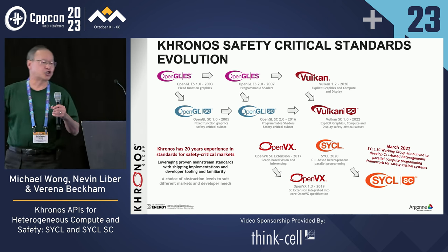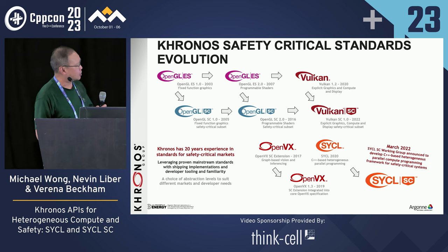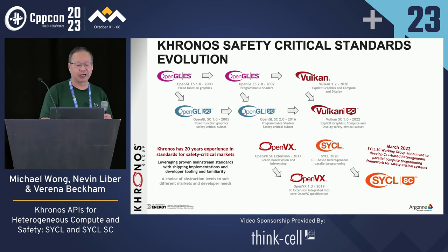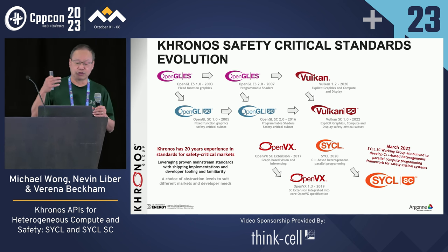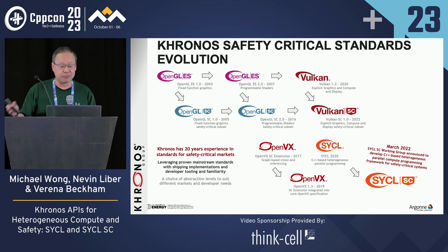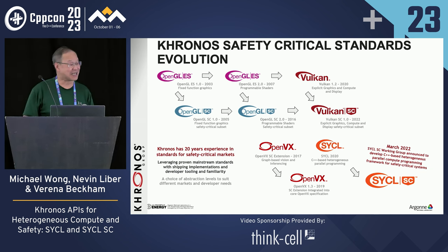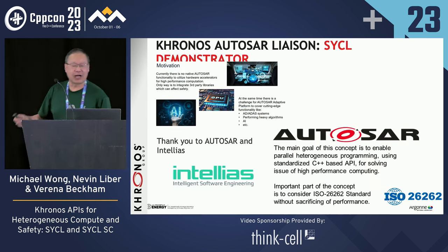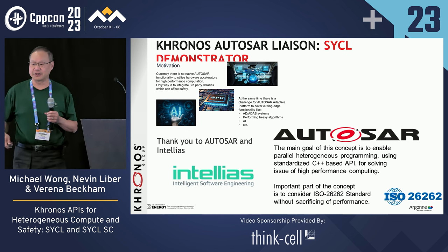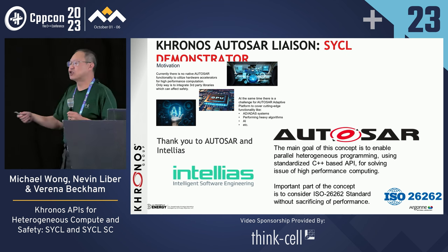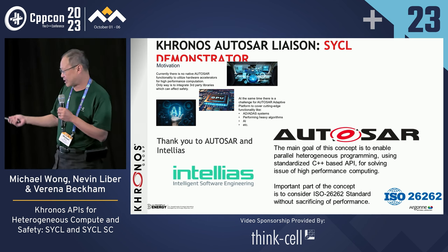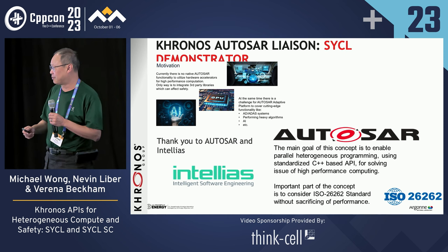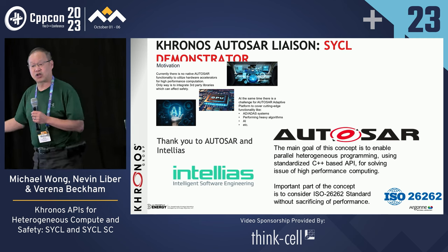Part of this talk is to show where SYCL is going. Kronos Safety Critical is one of the big growing areas. Kronos has had many safety critical APIs, starting with OpenGL Safety Critical, Vulkan Safety Critical, and OpenVX. In March 2022, a new SYCL Safety Critical group was formed, and Farina is going to talk about that. I am also the chair of the SYCL Autosar group within Kronos, where we're building a SYCL demonstrator for automotive within the Autosar consortium — a concept enabling parallel heterogeneous computing using standardized C++ APIs for high-performance computing. That's been going for about a year and a half and going really well. With that, I'll hand it over to my colleague Nevin Lieber.